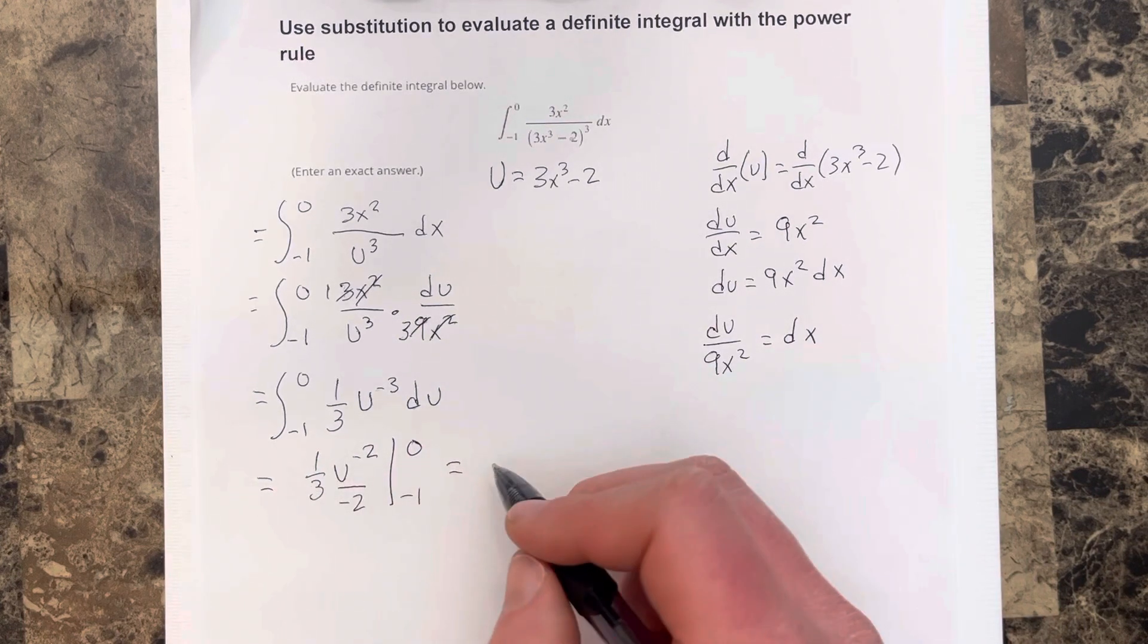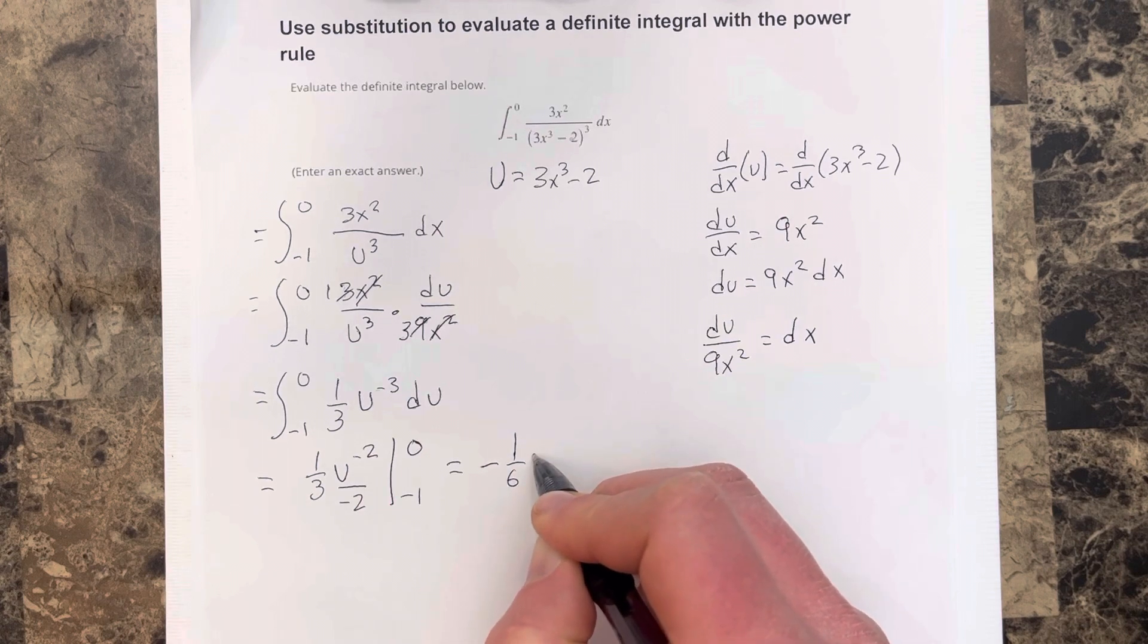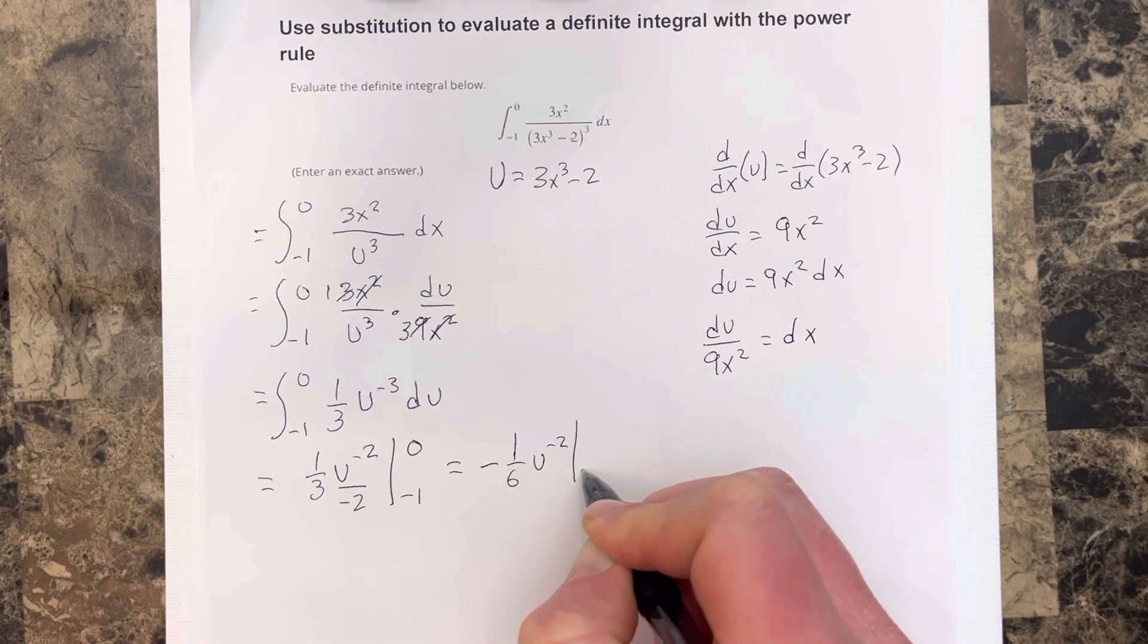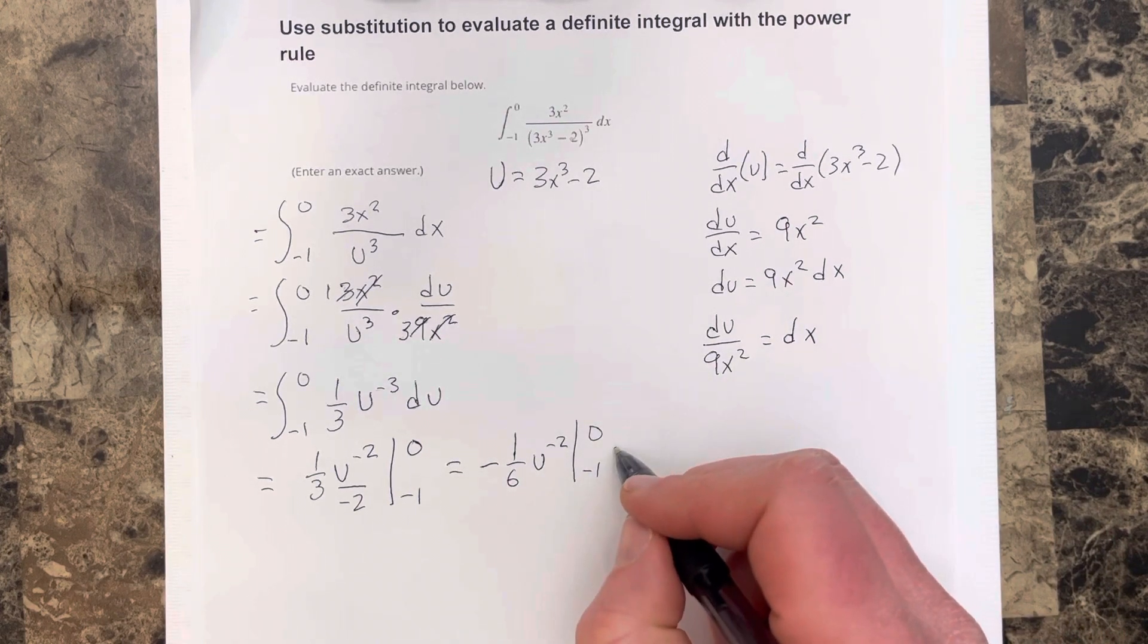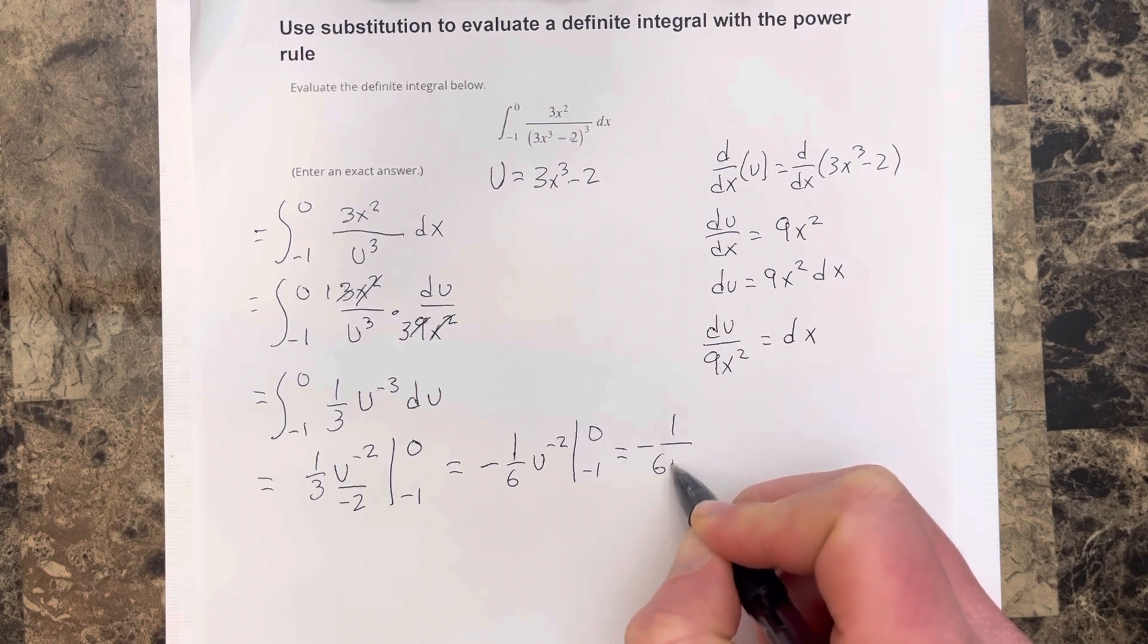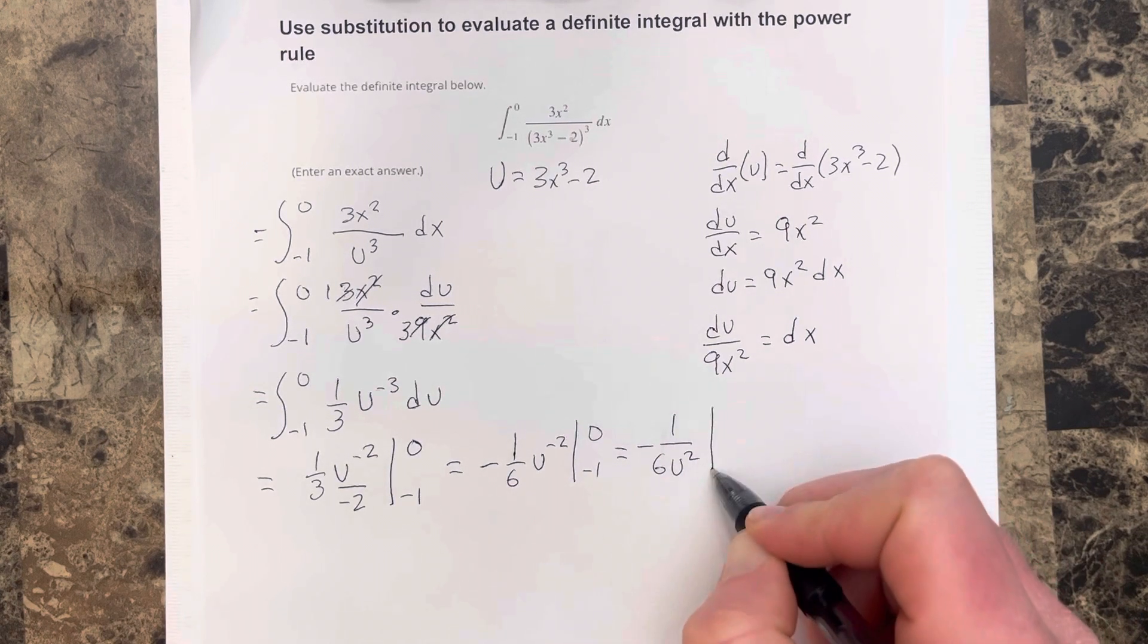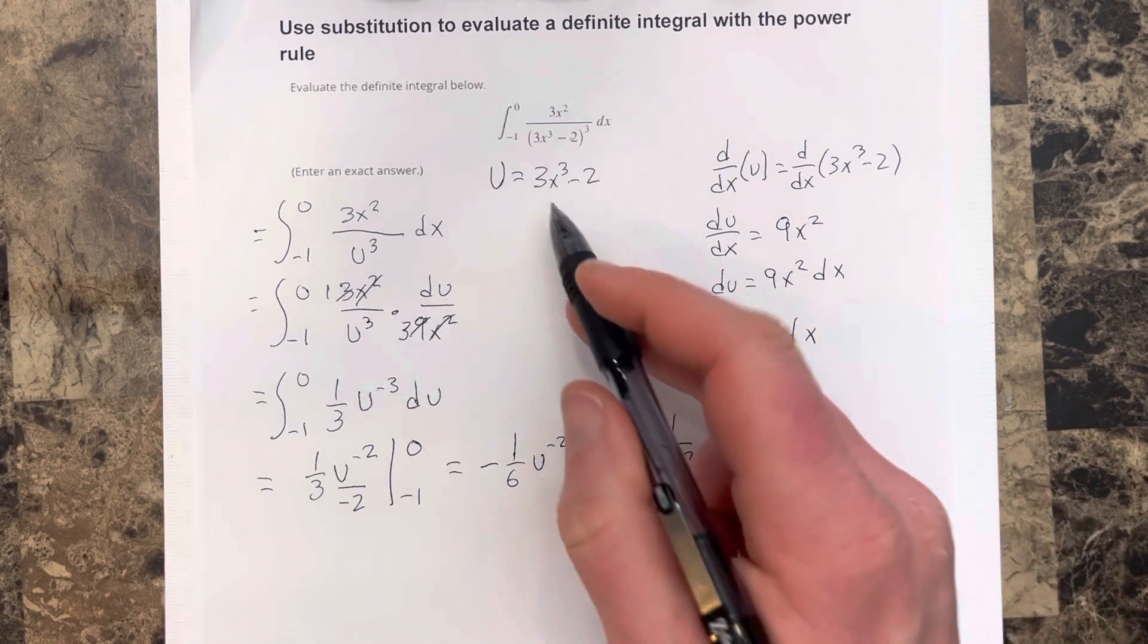Before we do that, we should simplify a little. So that's negative 1 sixth u to the negative 2 from negative 1 to 0. I'm going to bring this to the denominator, so I get that's equal to negative 1 over 6u squared. Again, evaluating from negative 1 to 0, and then I'm going to resubstitute u back in.